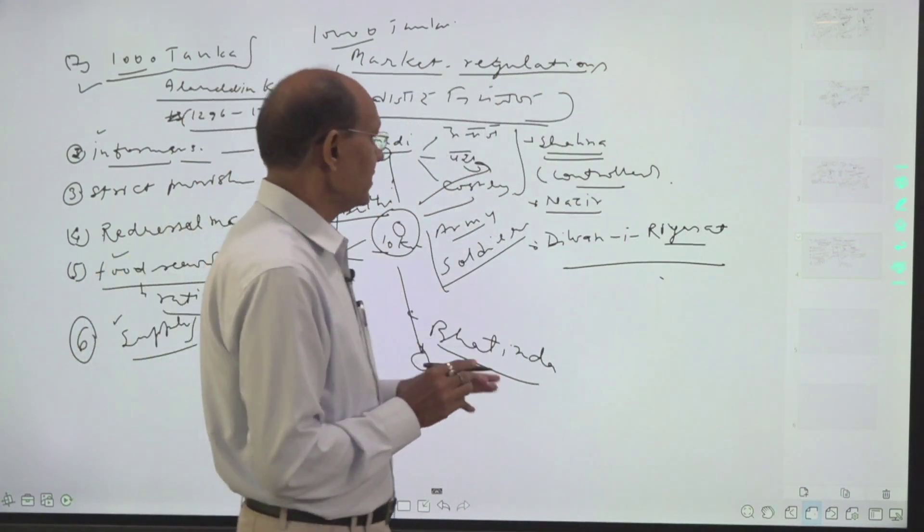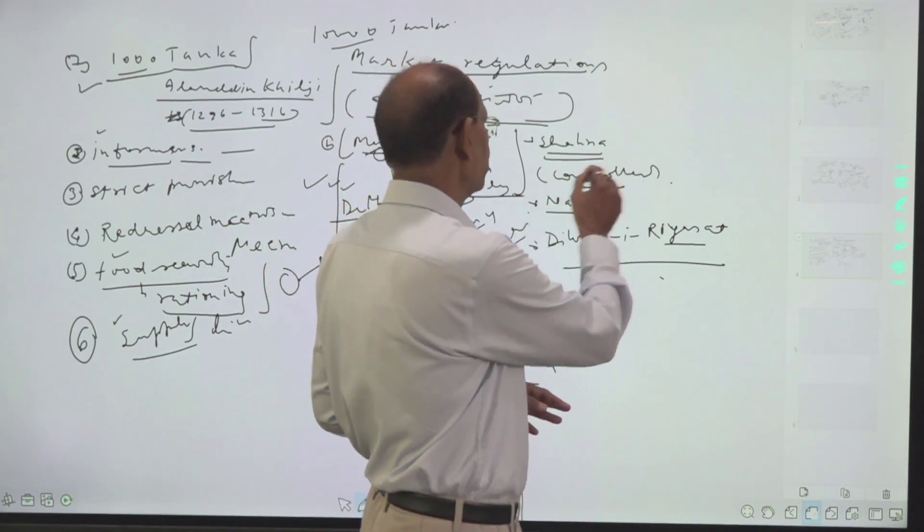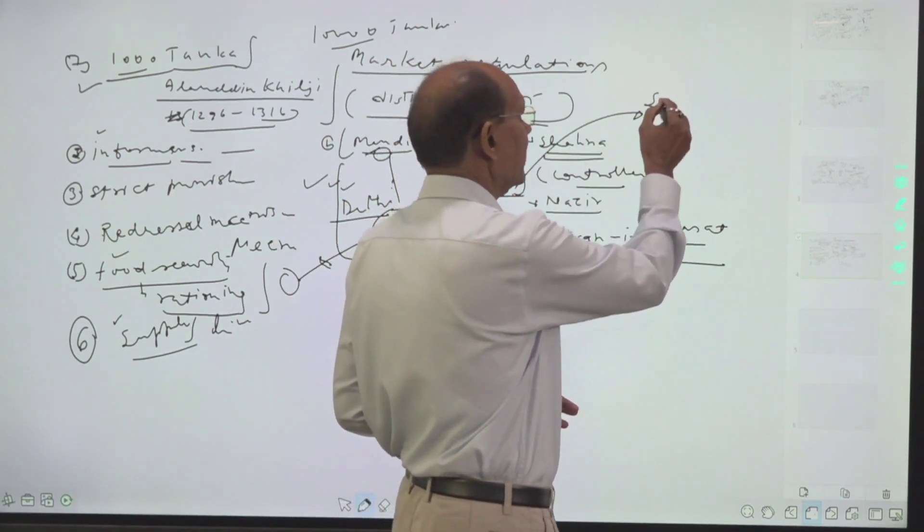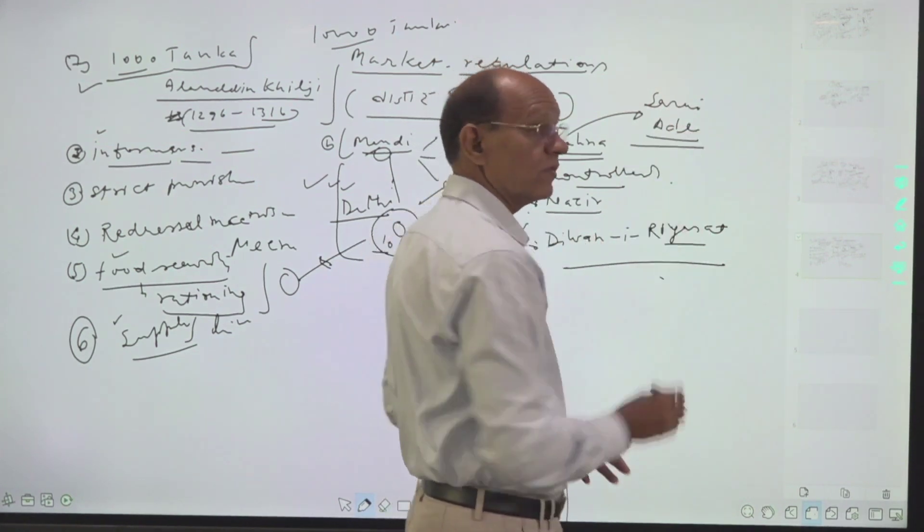For that reason, the third category of the mandi, which dealt with costly items, was called Sarai Adel. Sarai Adel means place of justice.